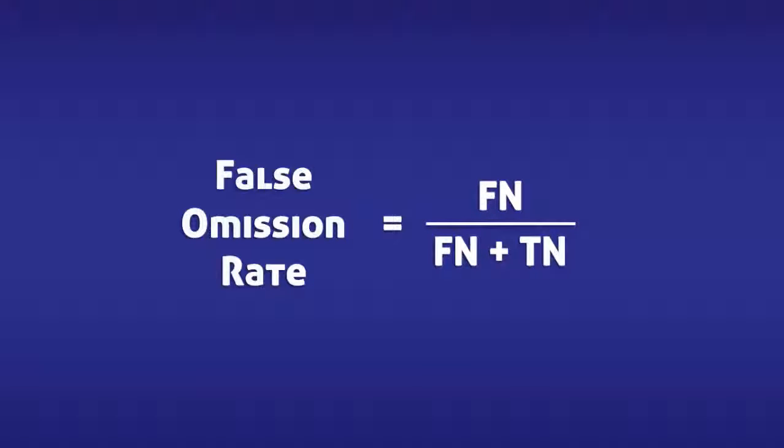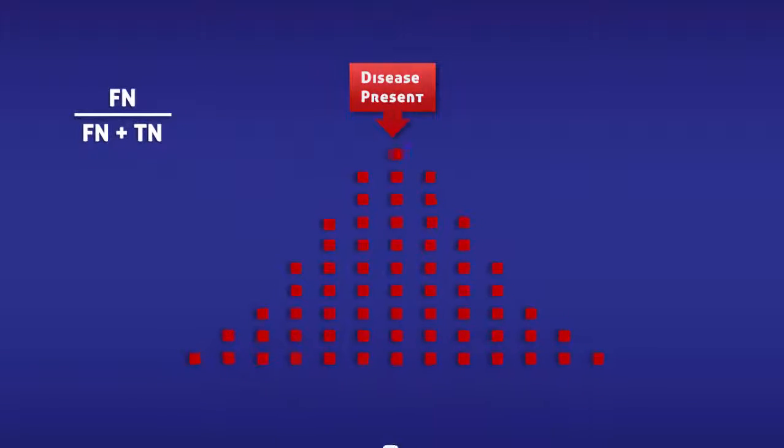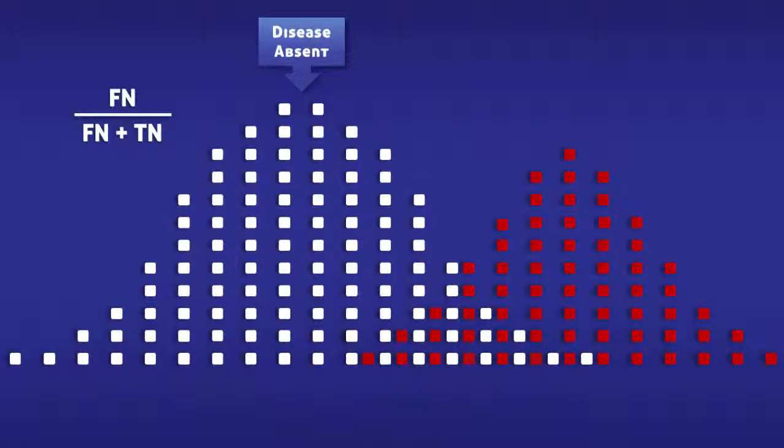The false emission rate is calculated by dividing the number of false negatives by the total number of negative tests. To help us understand this equation, we are going to imagine that a group of people are being tested for a disease.